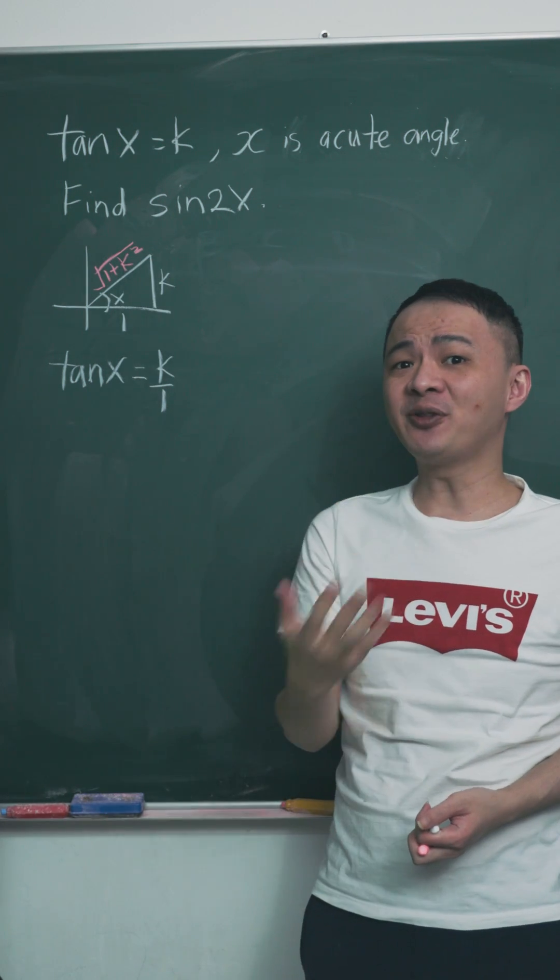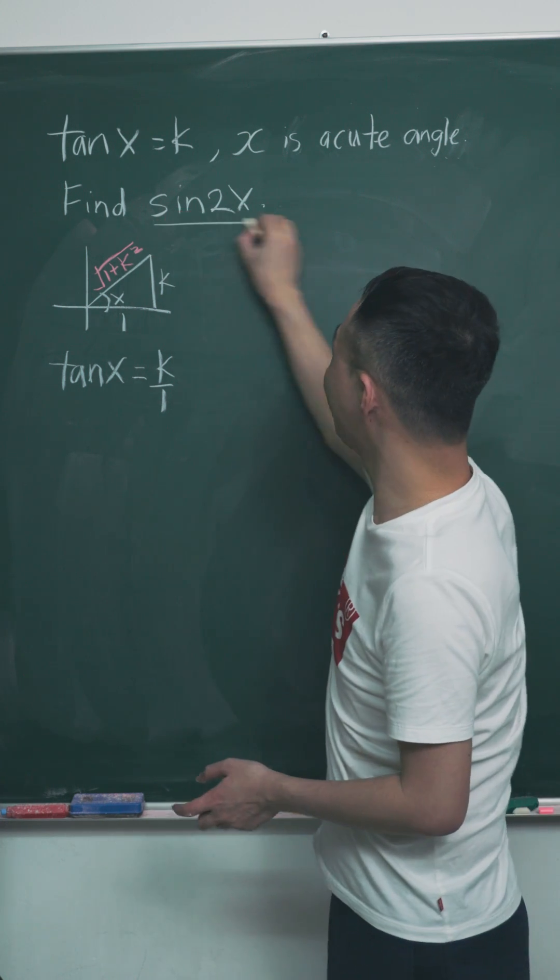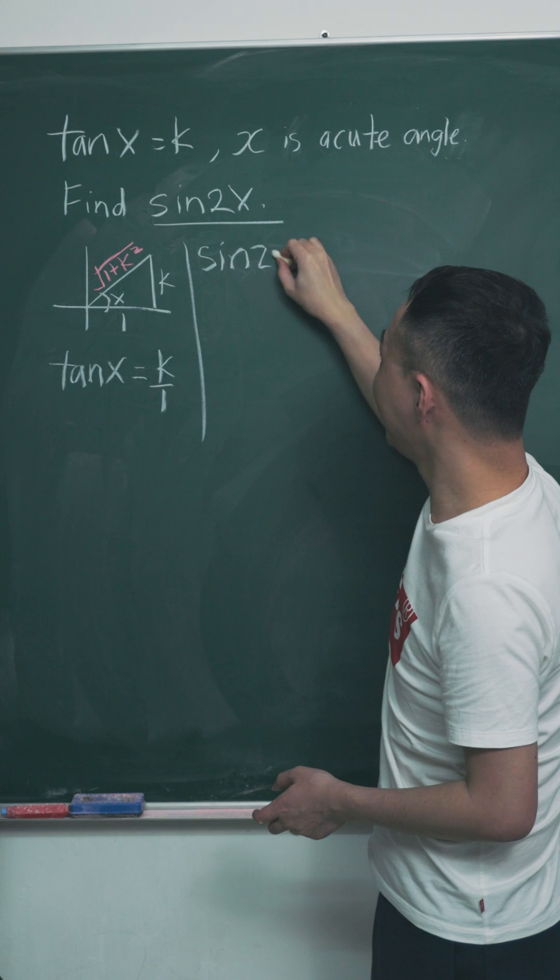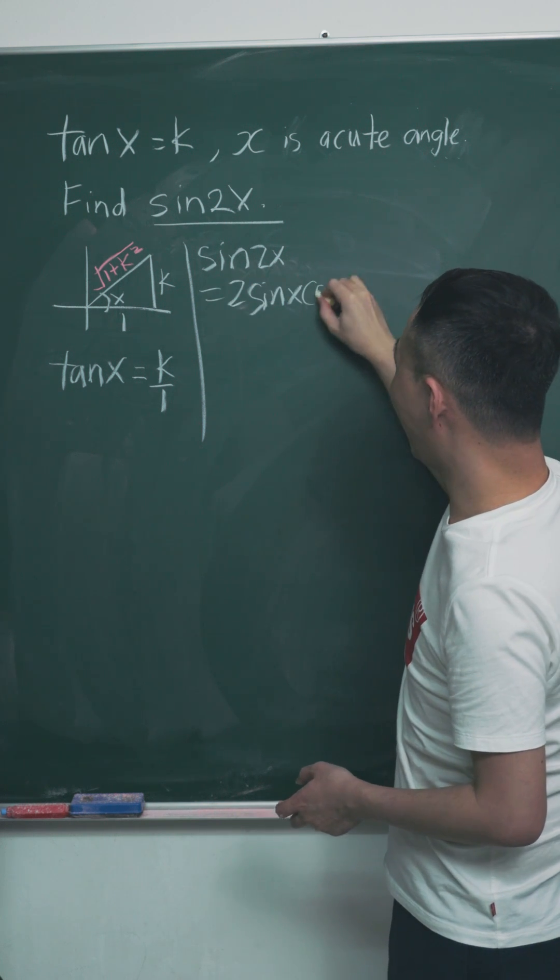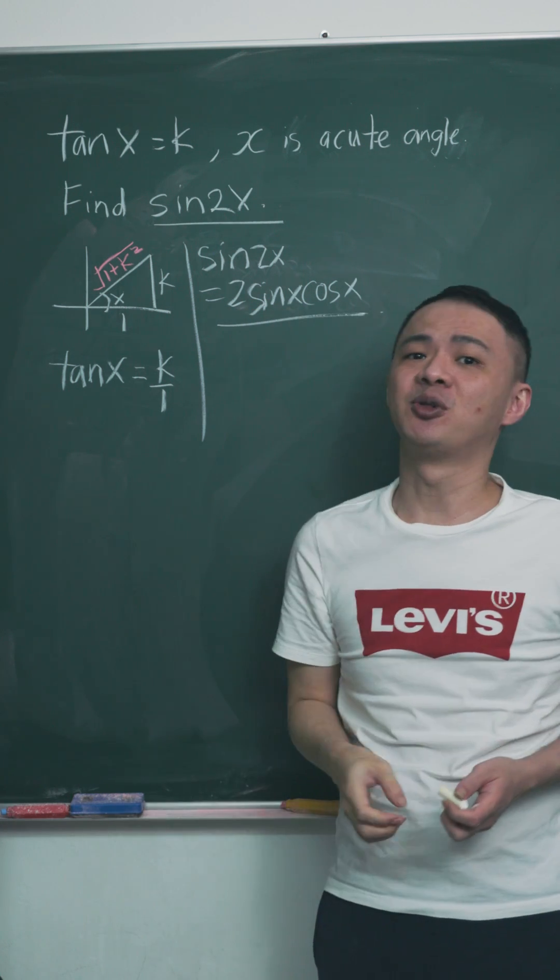Why do I want to do that? Because I need to find sine and cos at the same time. Because the question asked me to do sine 2x, I know the formula for sine 2x is basically 2 sine x cos x. So this is the reason why I need to find sine x and cos x and then I substitute into this formula.